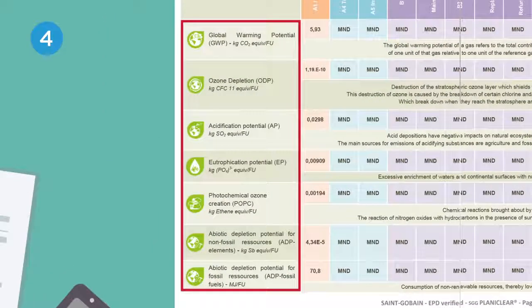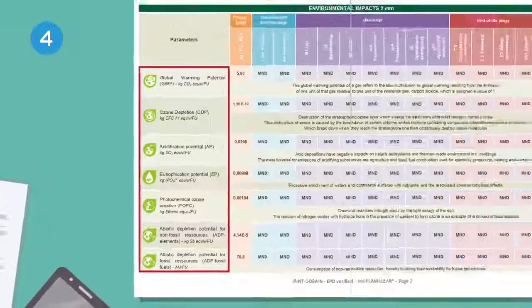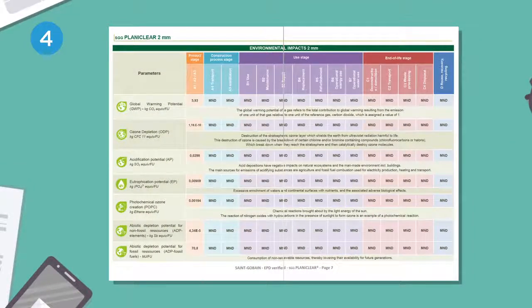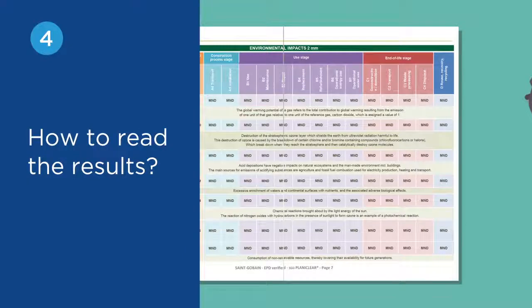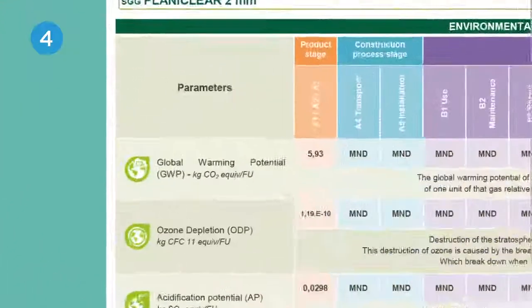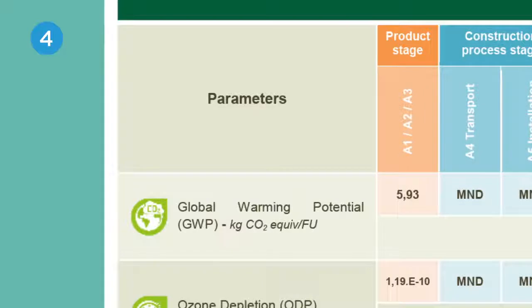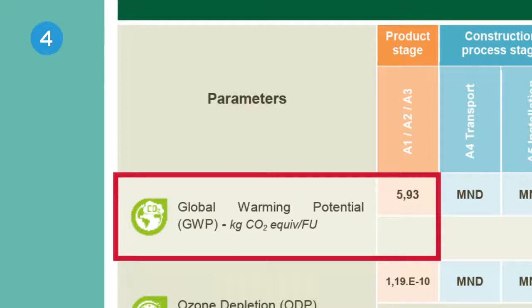Red, end of life stage — deconstruction and demolition; blue, product recycling if it happens. Each line presents the different impacts considered: emissions, energy and water consumption, waste production, and potential reuse of resources. How to read the results: how much CO2 is emitted in the manufacture of one meter squared of Planibel Clear two millimeter? This is shown under global warming potential — it's 5.93 kilograms of CO2 equivalent per functional unit.